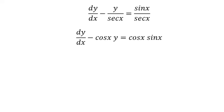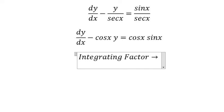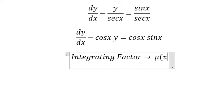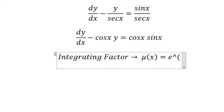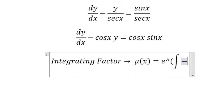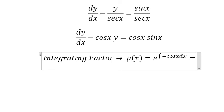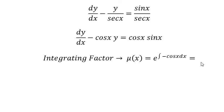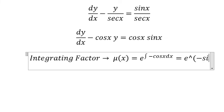Next we need to use the integrating factor, so we will have µ(x) equals e to the power of the integral. We see that we have negative cosine x, and we put it in here. The integral of this gives us e to the power of negative sin x.